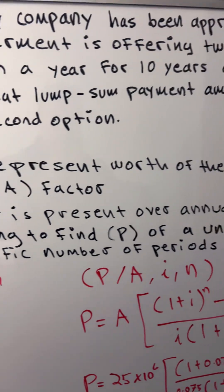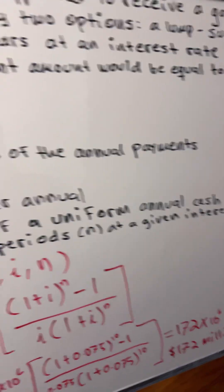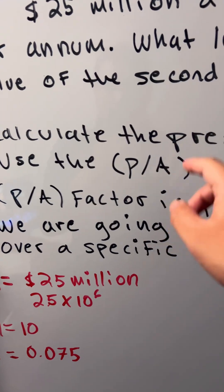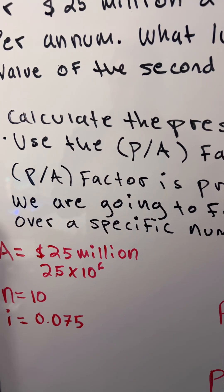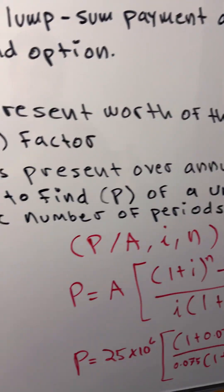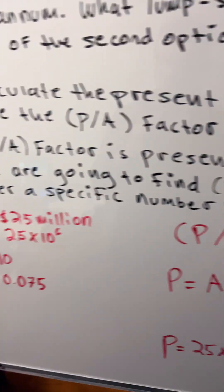We're going to calculate the present worth of the annual payments. We're going to use the P/A factor. What is the P/A factor? It's the present over annual.